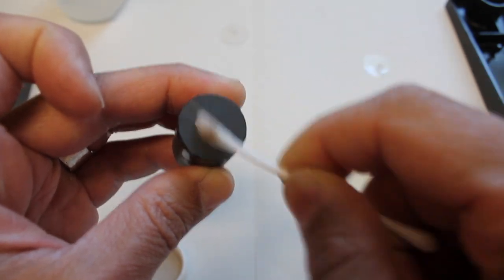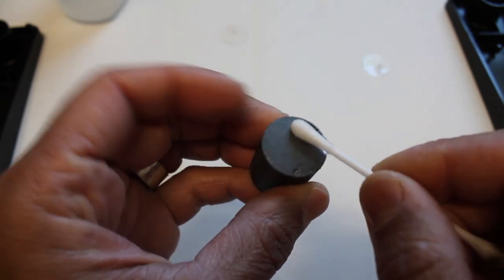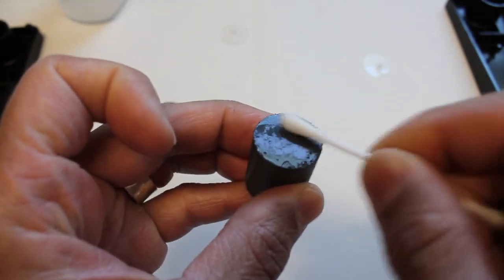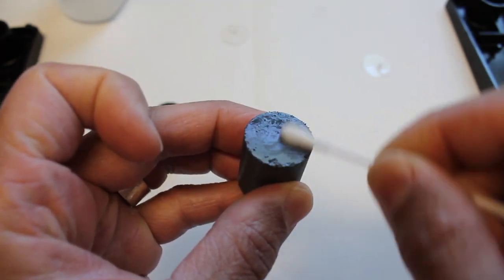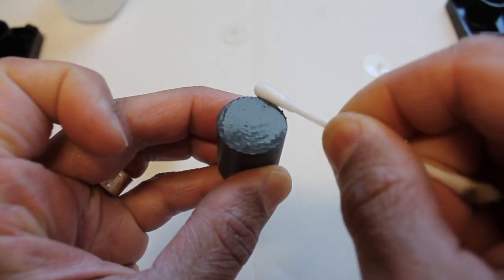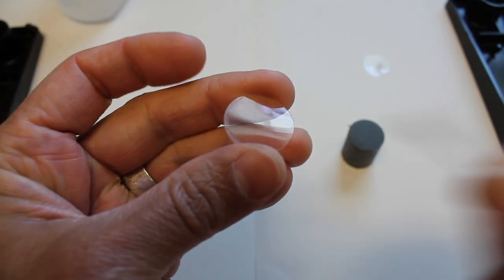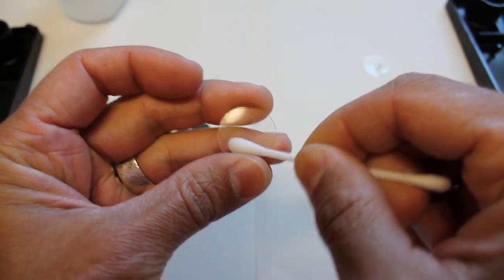The other way is you can actually sand the face of the magnet down and then put a polishing compound on top of it, but this is definitely the easier way to go. So clean the plastic discs before we glue them.